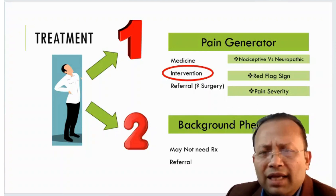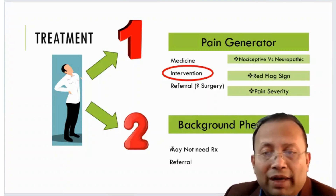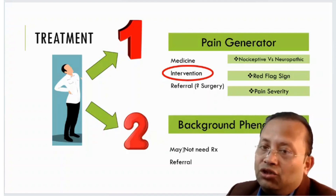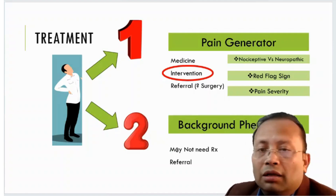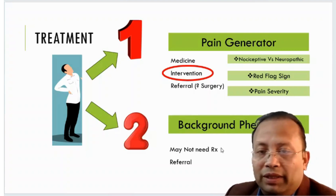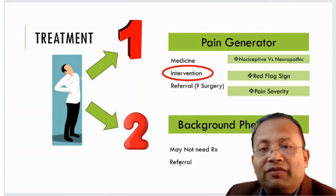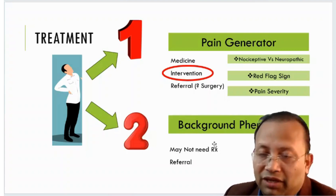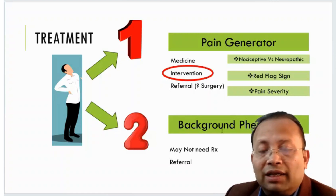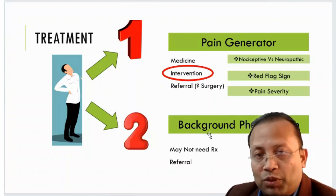For background phenomena treatment, you may or may not need any additional treatment. If the background phenomena is degenerative or idiopathic, treatment of the pain generator is the only treatment, since you cannot modify degeneration or an idiopathic cause. But if the background phenomena is infective, inflammatory, or traumatic, we refer the case to the respective specialty for additional treatment.